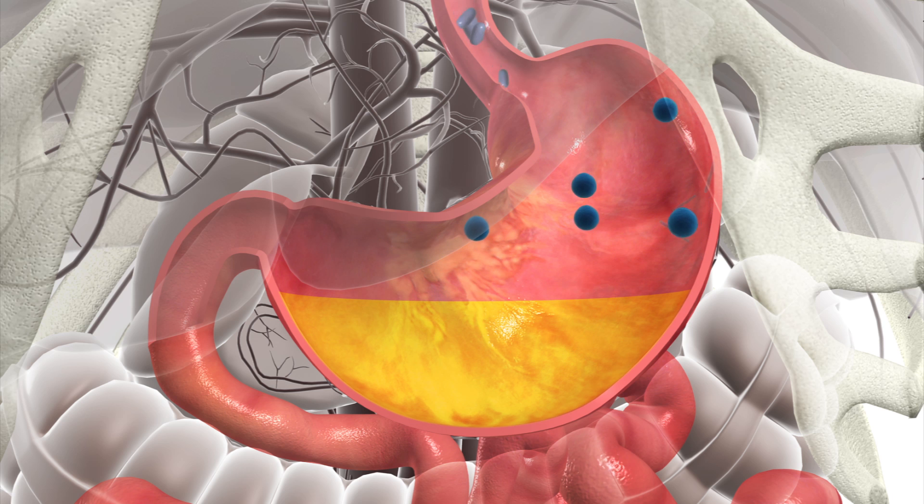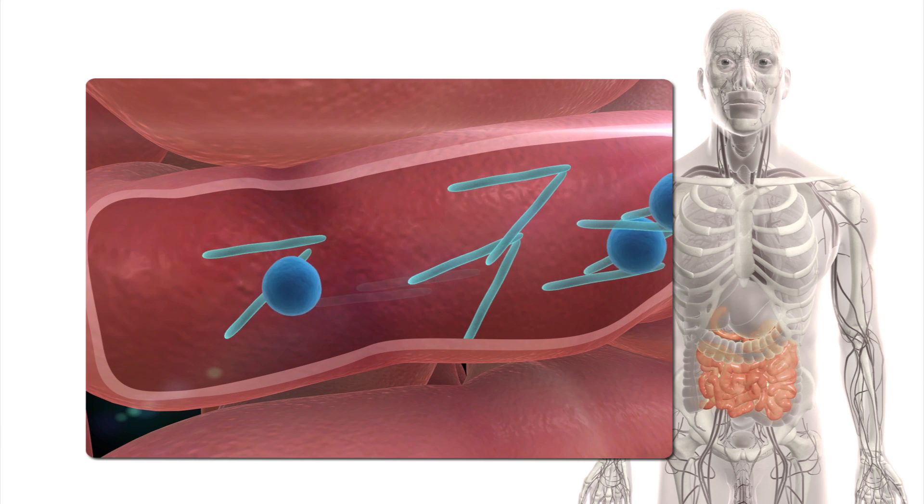Once the C. diff spores enter the body, they survive stomach acid and move into the small intestine where they multiply.